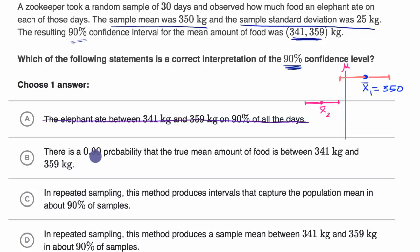There is a 0.9 probability that the true mean amount of food is between 341 kilograms and 359 kilograms. So this one is interesting, and it is a tempting choice, because when we do this one sample, you can kind of say, if I did a bunch of these samples, 90% of them, if we have a 90% confidence interval or a 90% confidence level, should overlap with this true mean, with the population parameter.